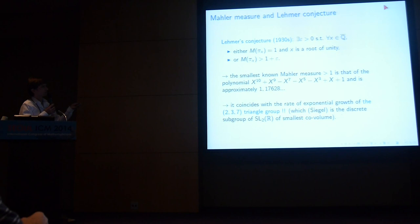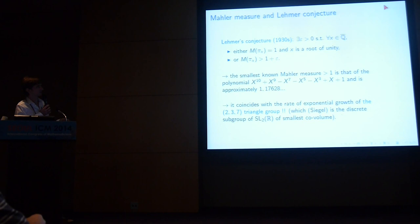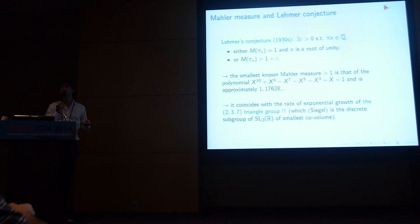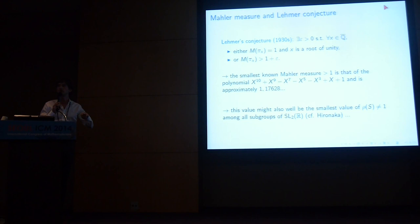In fact, there is a theorem generalizing this for hyperbolic cocompact groups. What is funny is that this group is also the hyperbolic orbifold surface of smallest possible covolume. I showed that this value is the smallest possible growth rate among all hyperbolic cocompact groups, and as far as I can tell, it could be the smallest growth rate among all subgroups of SL_2(R).